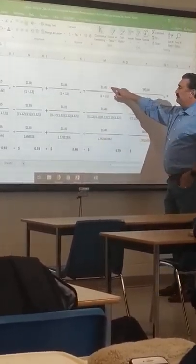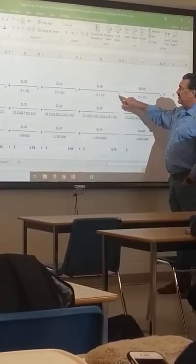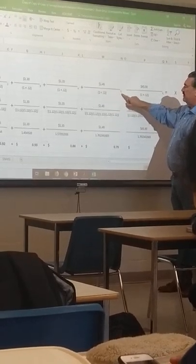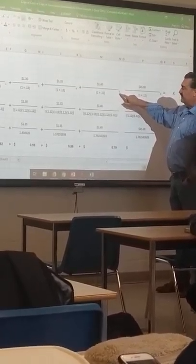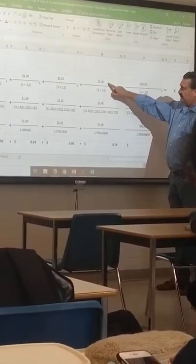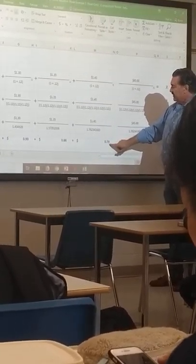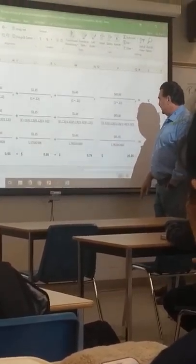Here I've got $1.40 being paid out as a dividend in year 5, so it's 12% period 5. Get the present value interest factor, multiply it by $1.40, that gives me 79 cents.